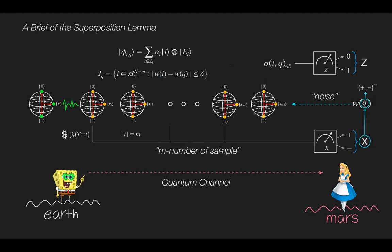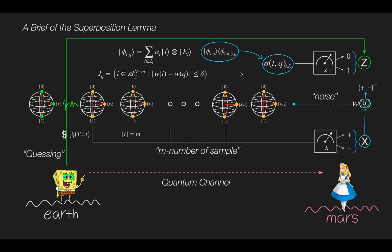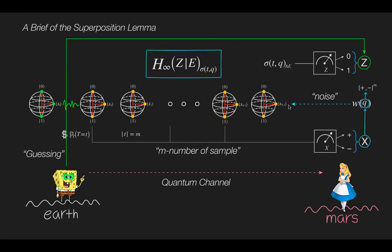Then Alice measures sigma_tq in the computational basis Z to obtain a string of random bits. Sigma_tq is the density matrix form of the unmeasured states from the sampling. Again, adversary Bob would like to guess the information of her random variable Xi. This involves computing the conditional min entropy of Xi given Bob's entangled state E.